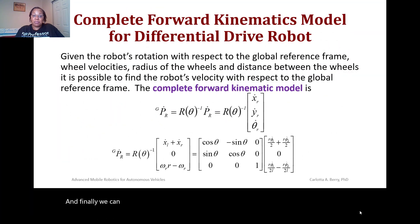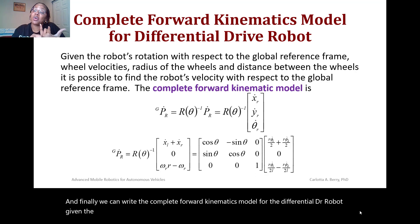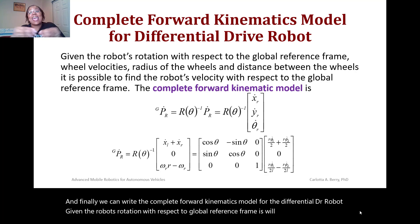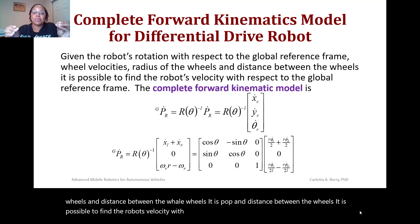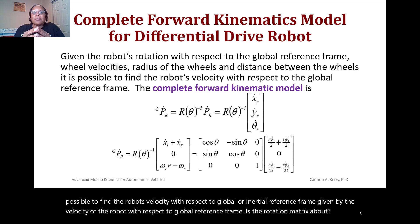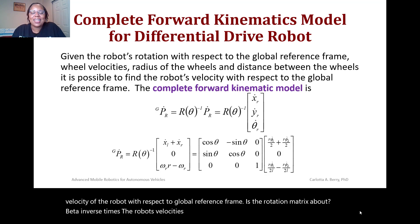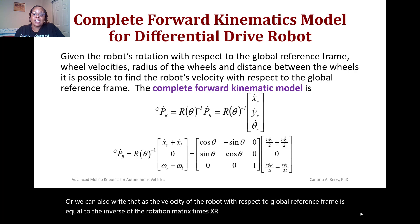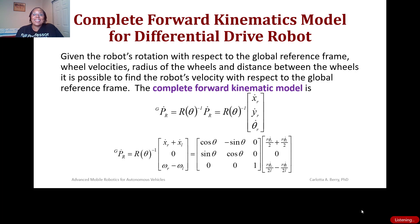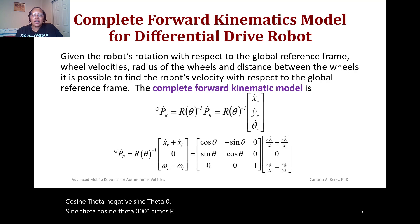The complete forward kinematics model for the differential drive robot is written given the robot's rotation with respect to the global reference frame, its wheel velocities, radius of the wheels, and distance between the wheels. The velocity of the robot with respect to the global reference frame is the inverse rotation matrix about theta times the robot's local velocities [xR_dot, yR_dot, theta_R_dot], or equivalently the inverse rotation matrix times [xR_dot + xL_dot, 0, omega_R - omega_L].